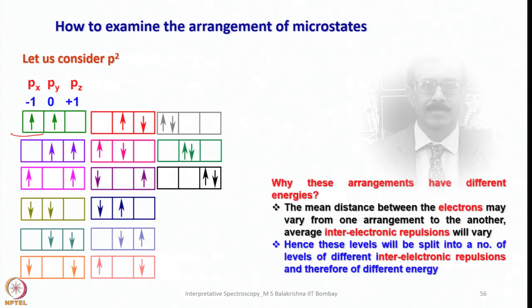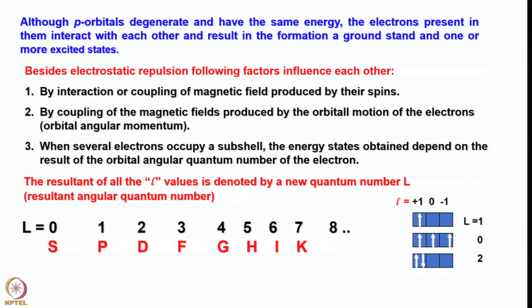Why do these arrangements have different energies? The mean distance between the electrons varies from one arrangement to another, so average inter-electron repulsions vary. As a result, these levels are split into a number of levels of different energies. Although p orbitals are degenerate, the electrons interact with each other, resulting in a ground state and one or more excited states.